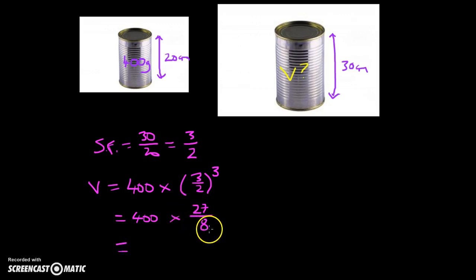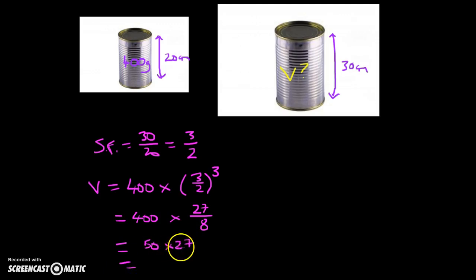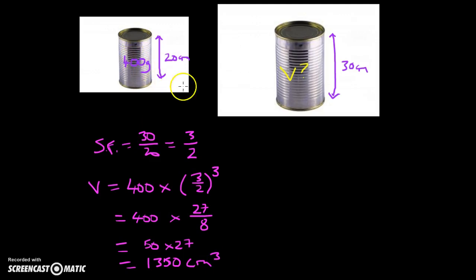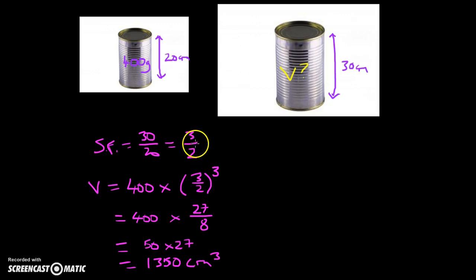So 400 divided by 8 gives us 50, and 50 multiplied by 27 is 1350 cubic centimetres. So remember: if you're looking for a volume with similar shapes, find the linear scale factor and cube it. And if you were looking for an area, you'd find the linear scale factor and square it — area is two dimensions, so you square it. Always find the linear scale factor first.